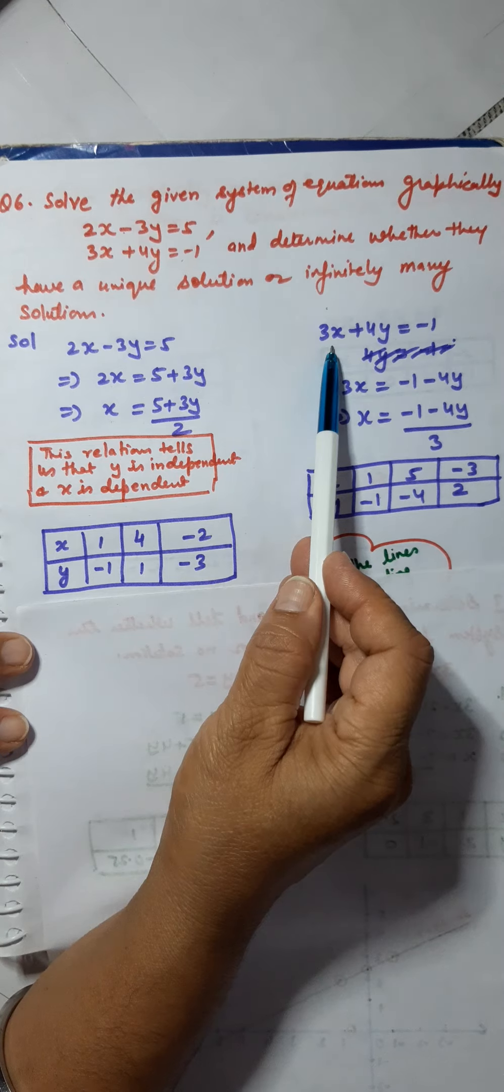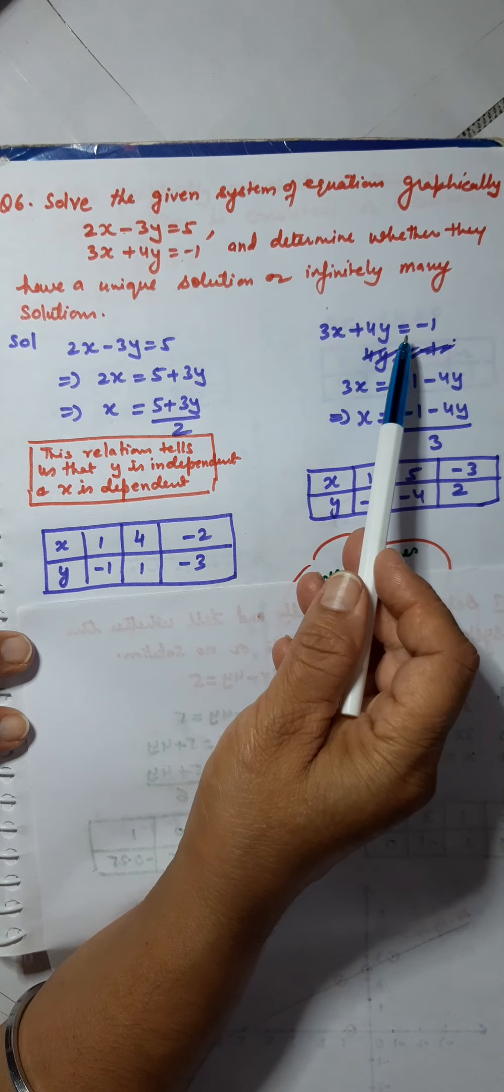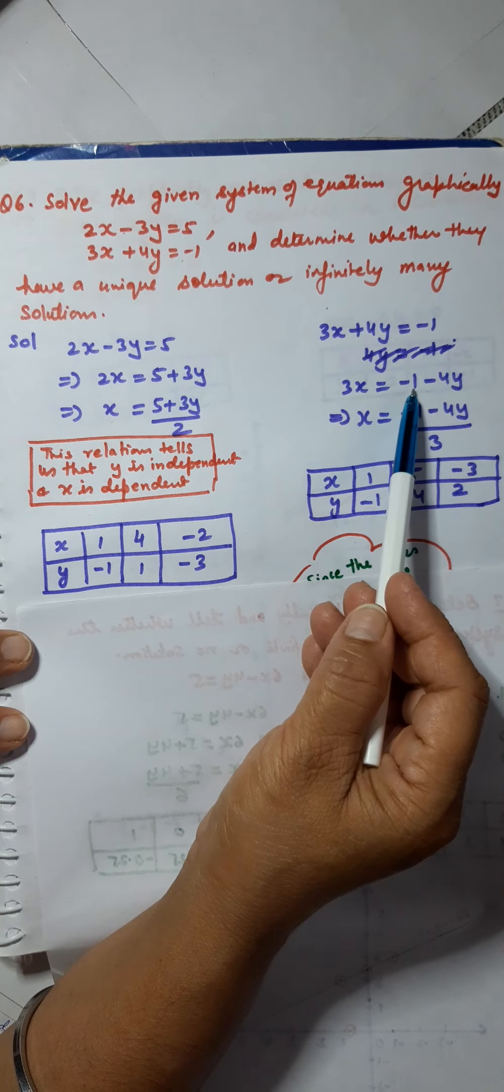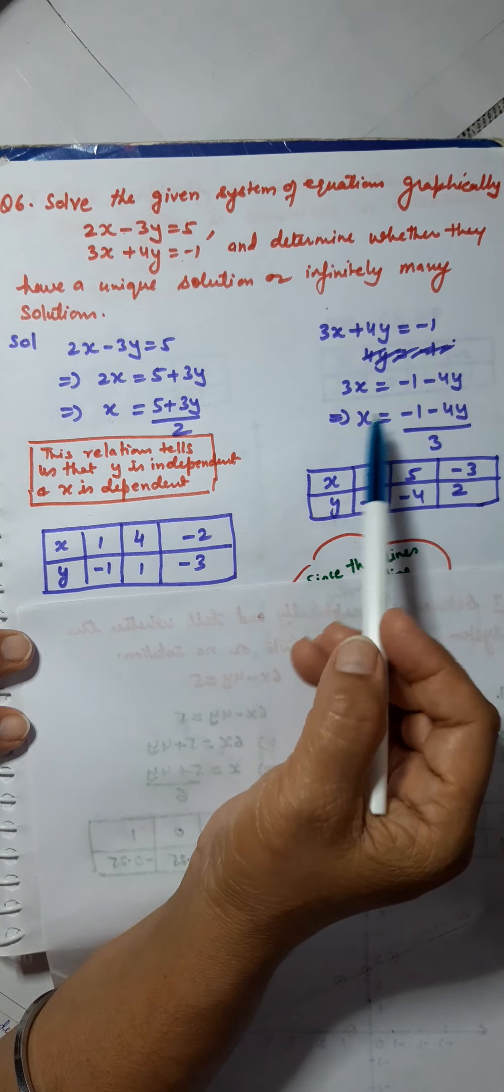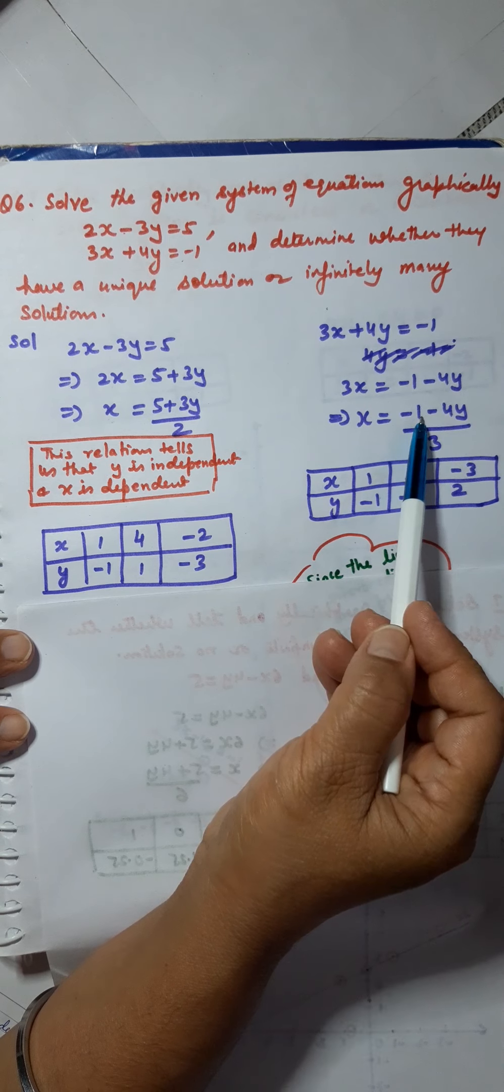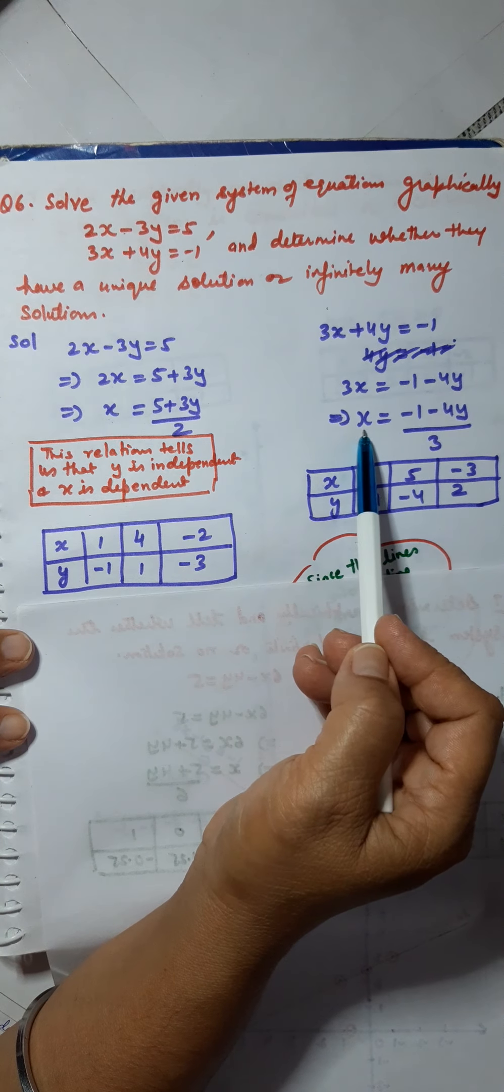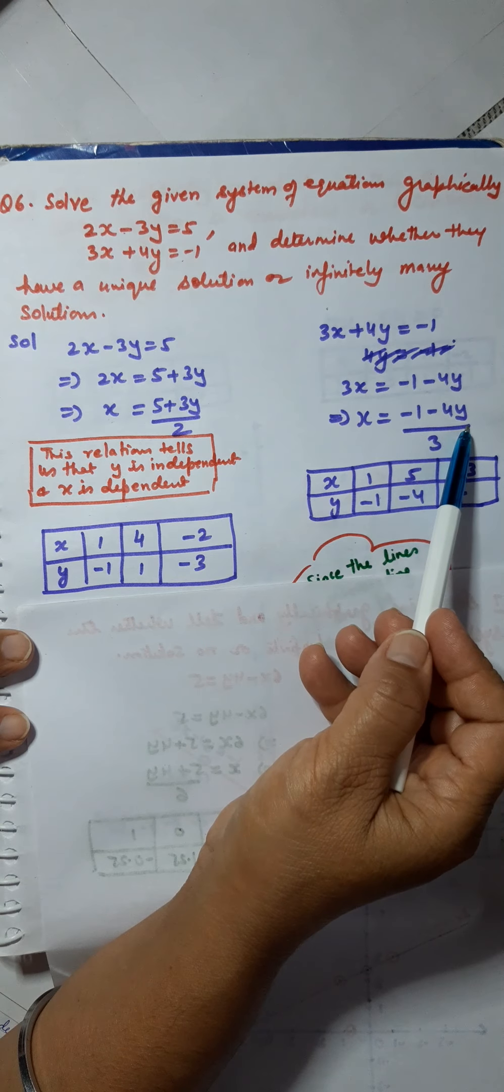Secondly, we take this equation 3x plus 4y equals minus 1, which implies 3x equals minus 1 minus 4y, which implies x equals minus 1 minus 4y upon 3. Again, I have converted x into a dependent variable, and y is independent.